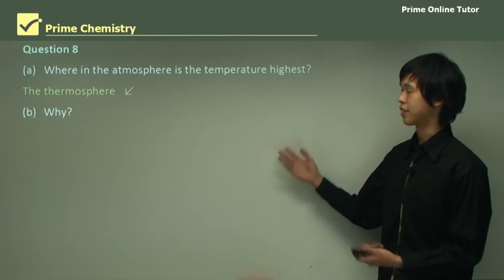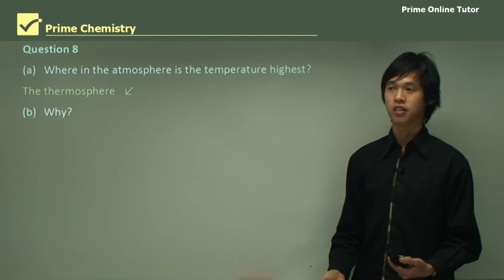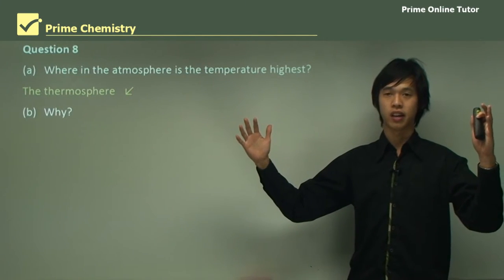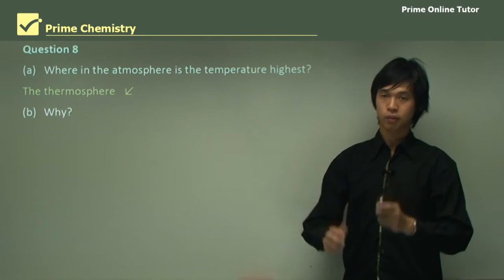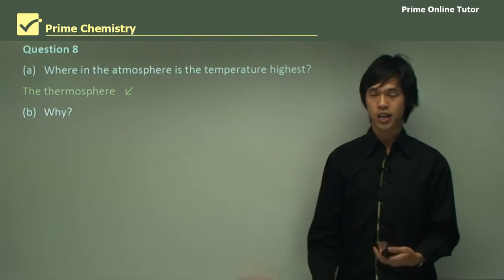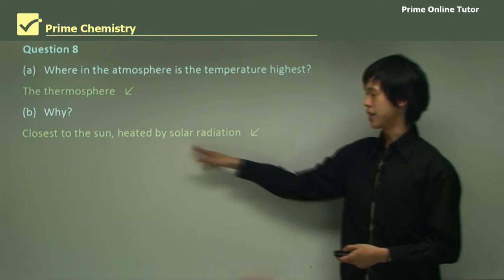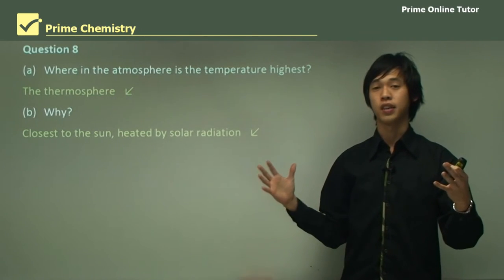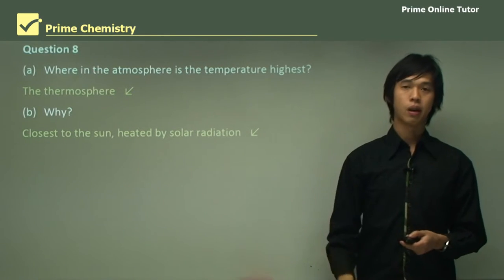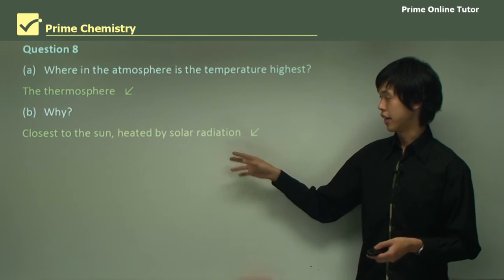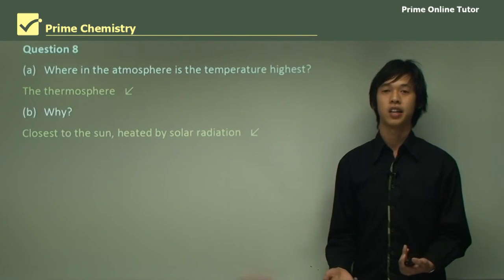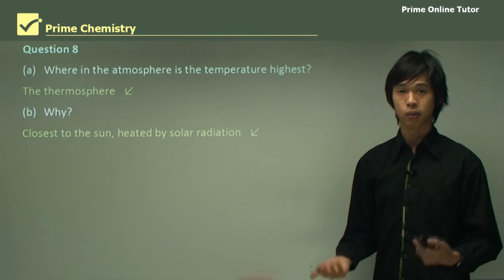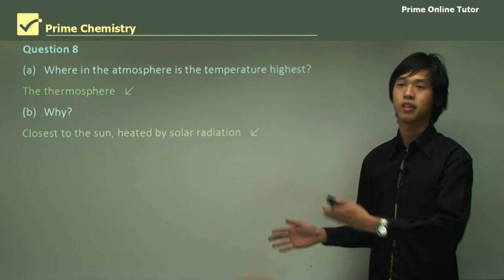Why is the thermosphere the hottest layer, even though it's so far from the Earth's surface? At the outermost part of the atmosphere, radiation from the sun causes electrons, atoms, and bonds to break. Being closest to the sun, it's directly heated by solar radiation. What we experience at Earth's surface is much more filtered than the outermost atmosphere, which is struck by a far greater amount of radiation — and so its temperature is much higher. Physics students will recognize this as the solar wind, which bombards the atmosphere creating this high-temperature region.